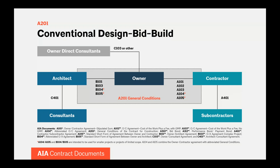Design and construction of complex projects are requiring many more parties, making the project structure more complex. Most of you are already familiar with traditional design-bid-build, where the owner selects the architect first to design the project and produce the construction documents, and then solicits bids to select the contractor. The A201 — the gray rectangle in the middle of the diagram — provides the general conditions that define and coordinate the roles, responsibilities, and relationships between the owner, architect, and contractor.